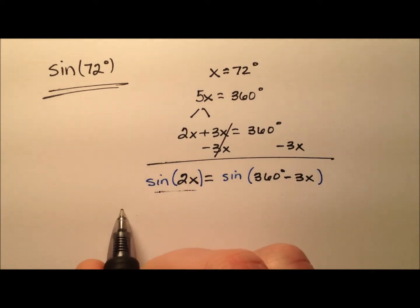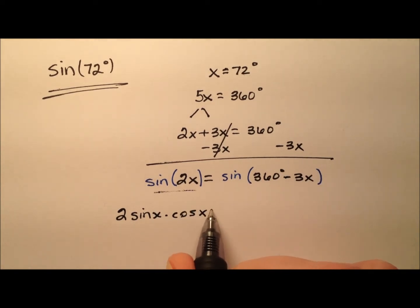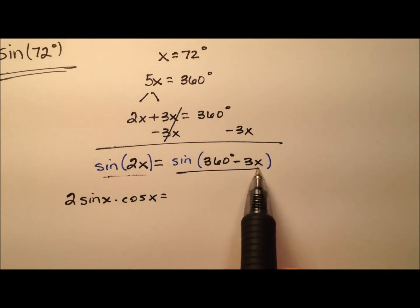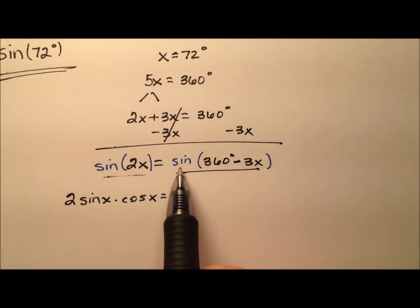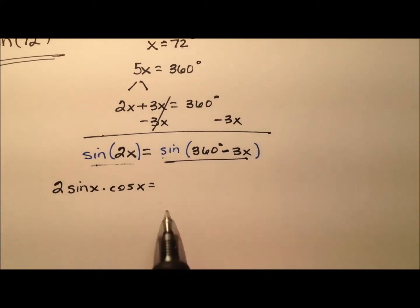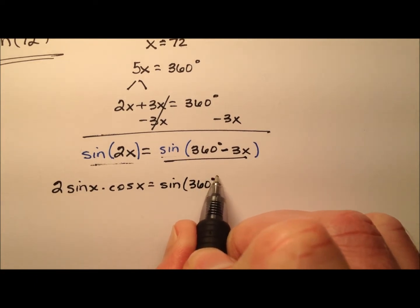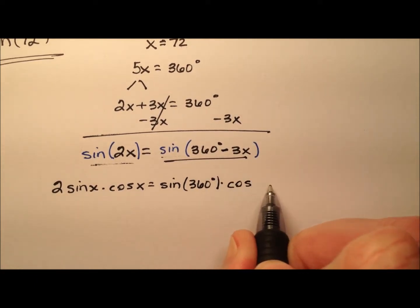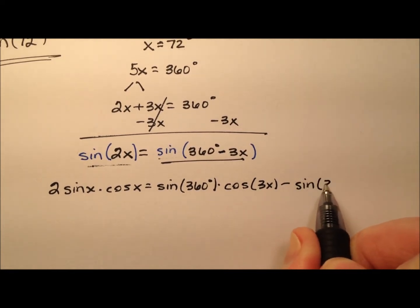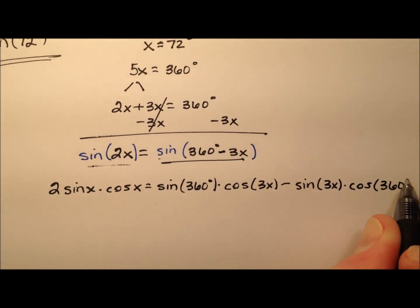I'll be able to expand the left side as 2 times the sine of x times the cosine of x. On the right side, it looks like I have the difference formula or difference identity for sine, so I'm going to expand the right side as well. That gives me sine of 360 degrees times cosine of 3x minus sine of 3x times cosine of 360 degrees.